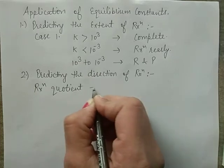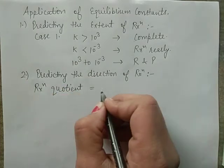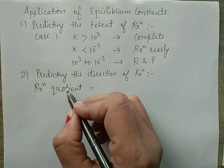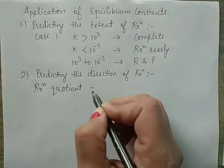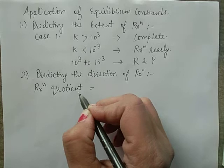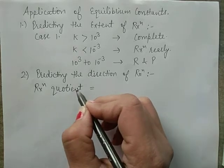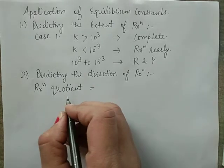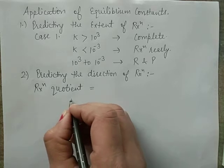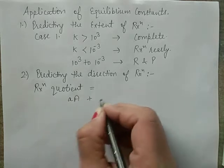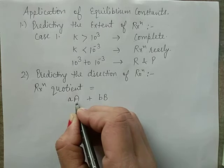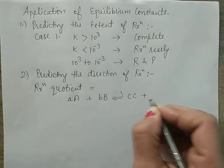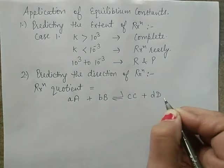The reaction quotient Q is the ratio of molar concentration or partial pressure of product species to reactant species at any stage. For a reaction A + B → C + D, Qc = [C]^c × [D]^d divided by [A]^a × [B]^b.